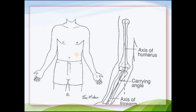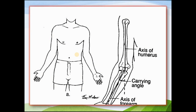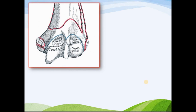From the bone there is an imaginary line or axis by which movement occurs. From the humerus an imaginary longitudinal axis passes, and from the forearm also an imaginary longitudinal axis passes. Here is the main point of our topic.